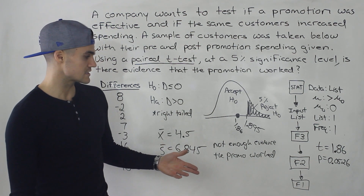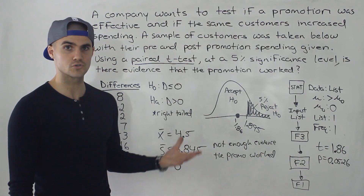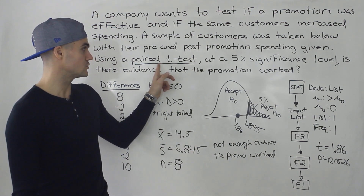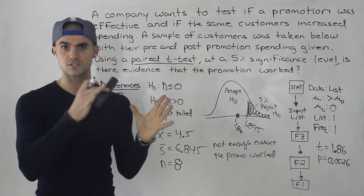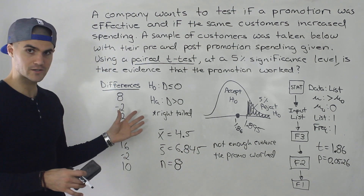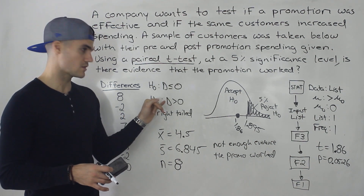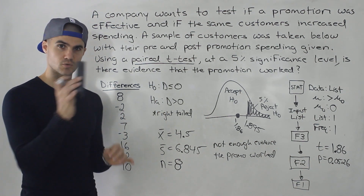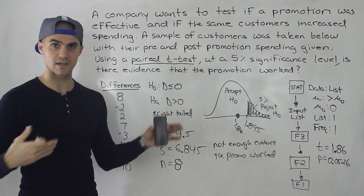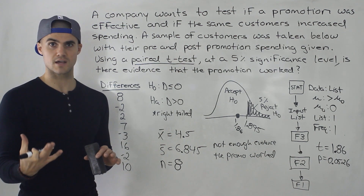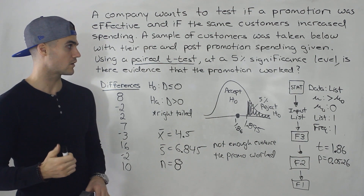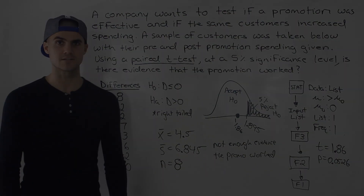The conclusion: there is not enough evidence that the promotion worked. When working with dependent samples and a paired t-test, take the two samples and convert to one using differences. Then depending on the question, test if differences are greater than zero (right-tailed), less than zero (left-tailed), or just not equal to zero (two-tailed). Be aware of the types of questions they ask you.